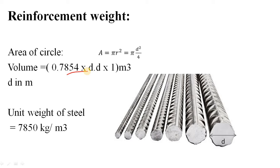Now, to get the weight of anything, you need to know the density, or unit weight, of steel. Density means the weight per unit volume. If you take 1 cubic meter of standard steel, its weight is 7850 kg. This value may vary slightly from place to place, but more or less you can take the unit weight of steel as 7850 kg/m³. So for 1 cubic meter of steel, you get 7850 kg.